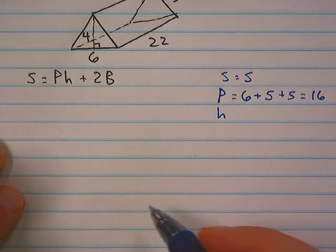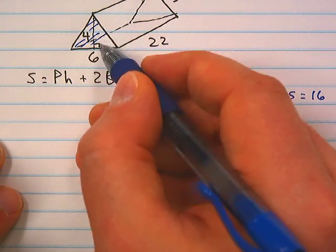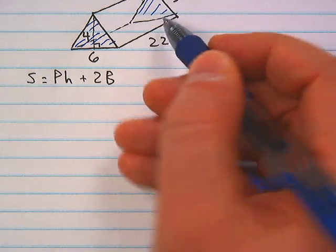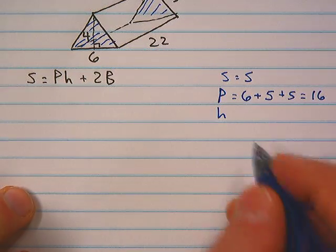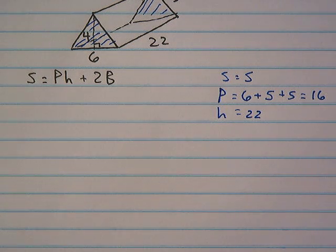Now the h here is the height of the prism. Now the height of the prism is the distance between the bases. So if we're saying that this is one base and this over here is the other base, then 22 would be the height of the prism. It looks like it's laying down but it doesn't matter which direction the prism goes, the height will always be the distance between the bases.